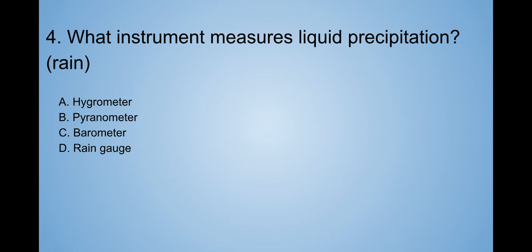Okay, number four. What instrument measures liquid precipitation or rain? A. Hygrometer. B. Pyranometer. C. Barometer. D. Rain gauge. Um, I don't want to guess. So take your 10 seconds.